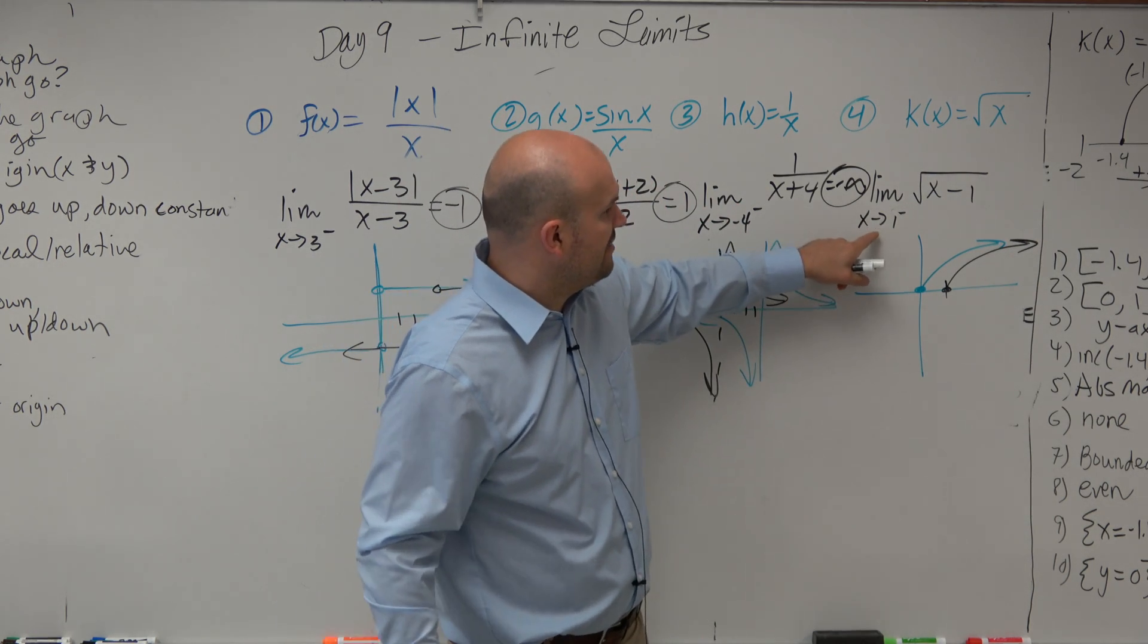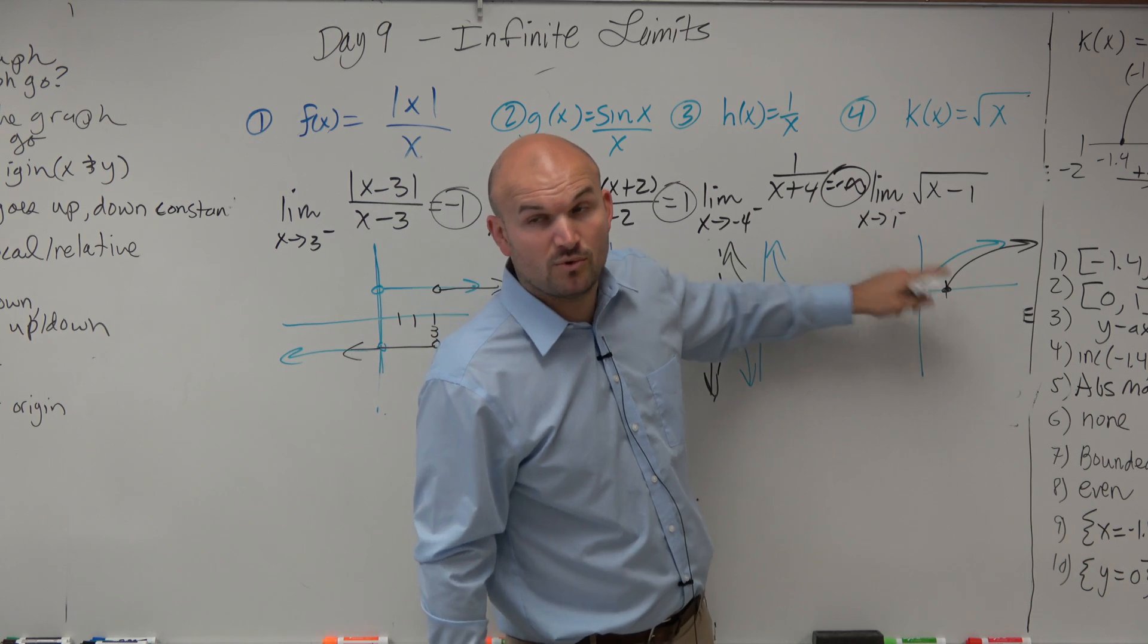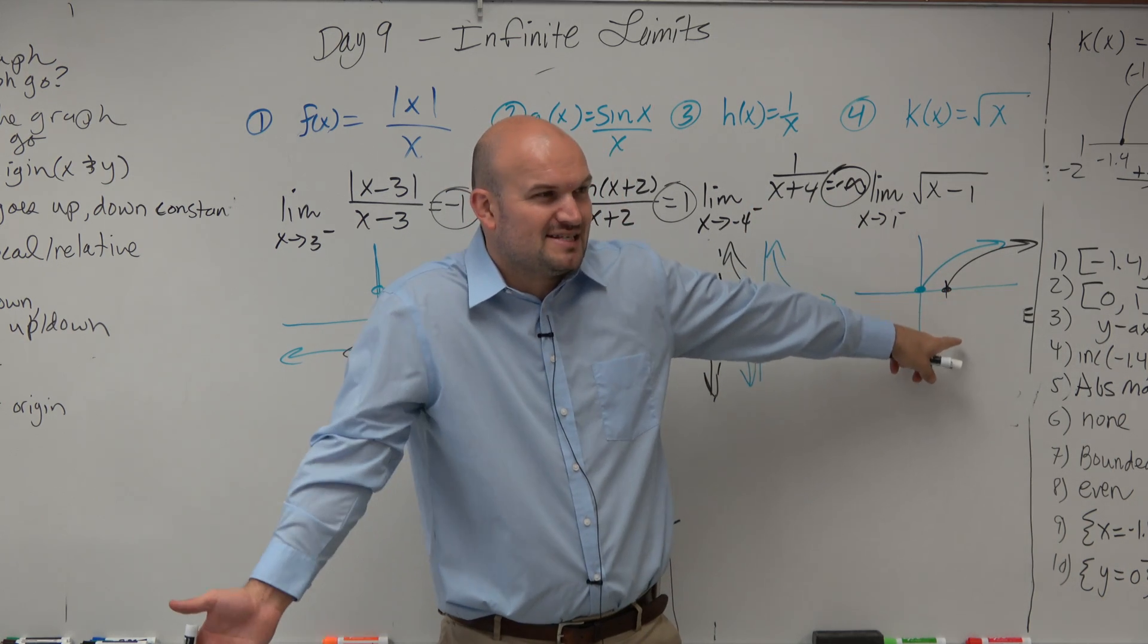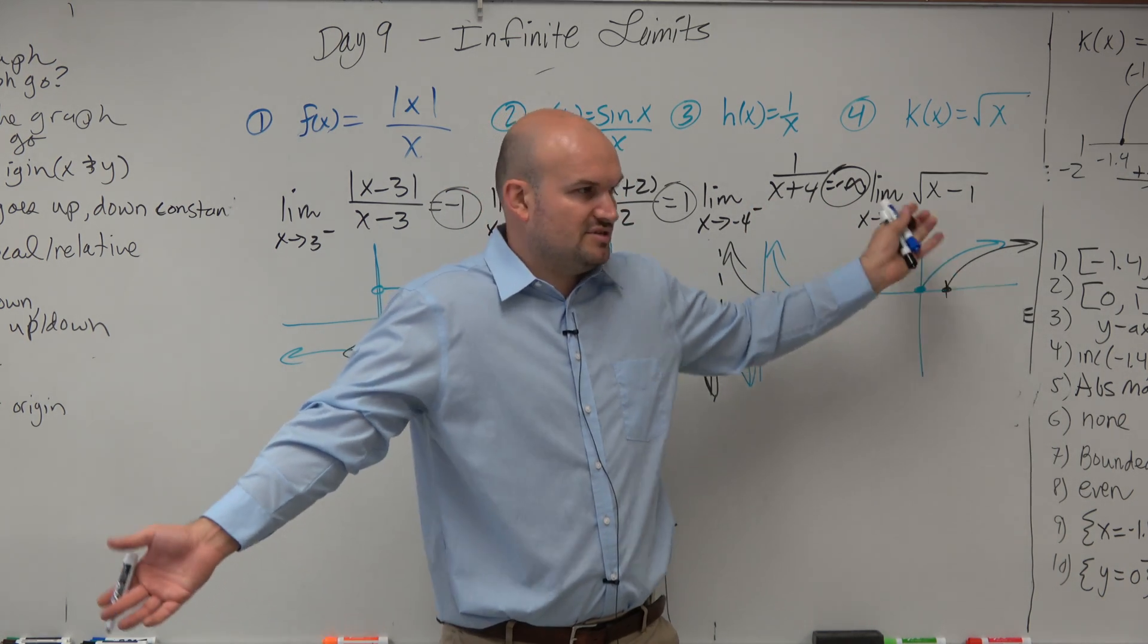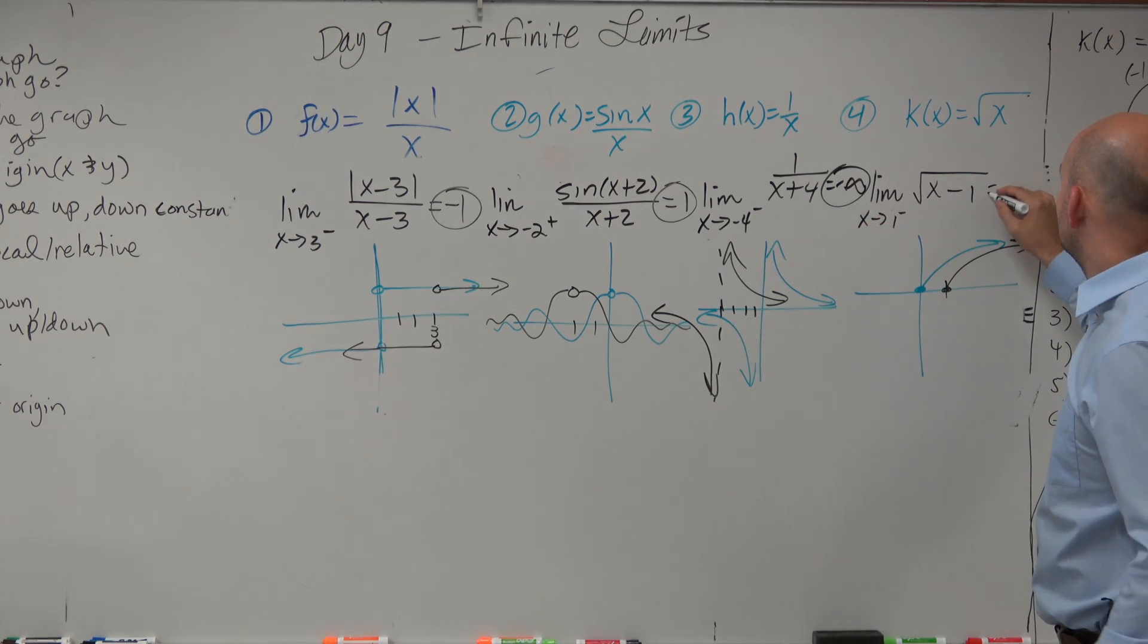So what they're saying is, evaluate positive 1 from the left-hand side. So as you're getting closer and closer to 1 from the left, but remember, what was on the left-hand side of everything? It was undefined, right? So therefore, this limit does not exist.